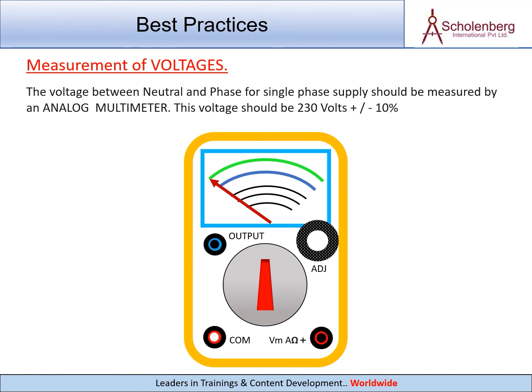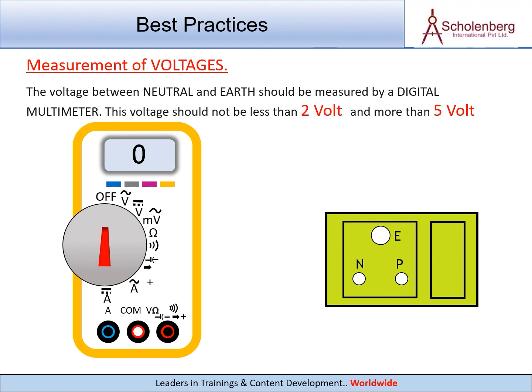Measurement of voltages: The voltage between neutral and phase for single phase supply should be measured by an analog multimeter. This voltage should be 230 volts plus or minus 10%. The voltage between neutral and earth should be measured by a digital multimeter. This voltage should not be less than 2 volts and not more than 5 volts.